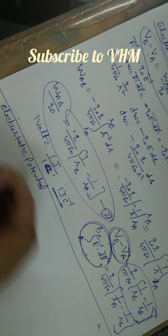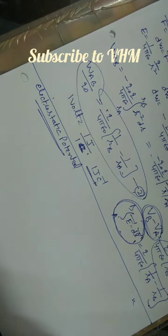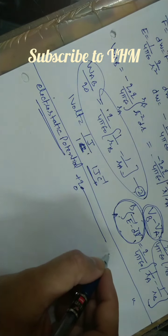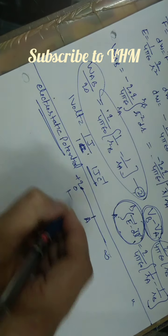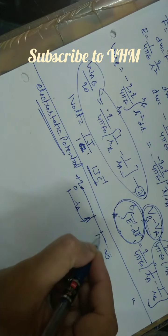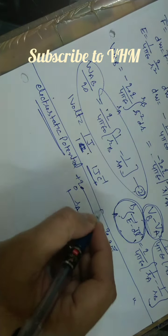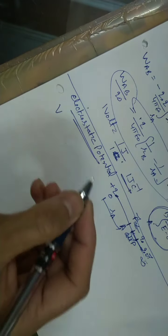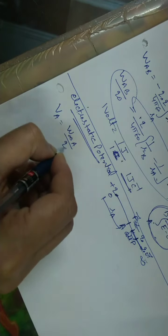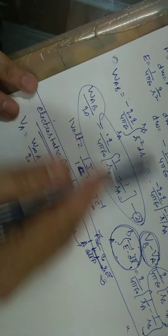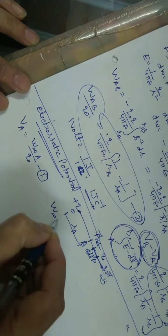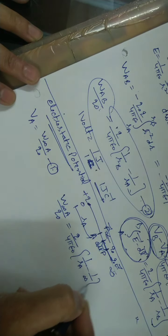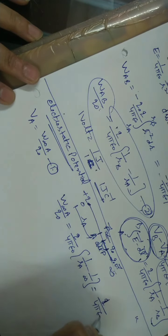Electrostatic potential is the work done per unit test charge from infinity to any point. Considering the same case — O with charge plus Q at the origin — and bringing the test charge from infinity to point A at distance R_A. At any point P, the test charge experiences force Q₀E vector; external force is applied in the opposite direction for small displacement. Using the same calculation approach, the work done per unit test charge is Q/(4πε₀) · (1/R_A − 1/∞), which gives 1/(4πε₀) · Q/R_A.